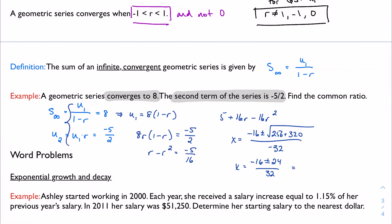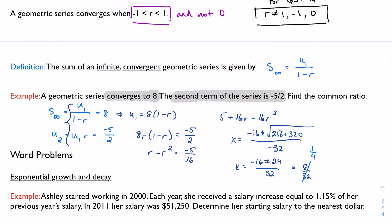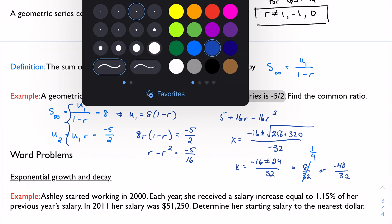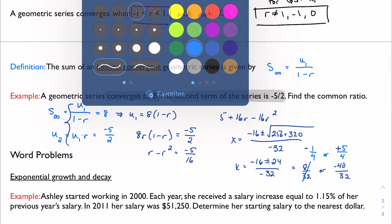So we get 8 over 32, which is just 1 fourth. Or we get negative 32 over 32. Excuse me, no. We get negative 40 over 32, which would be 5 over 4. And actually, it dawned on me that I misplaced a negative here. Let me go back and fix that. This should be negative 32. So this should be negative 1 fourth and positive 5 fourths. Can I have both? No. I can't have both. I just said one common ratio.